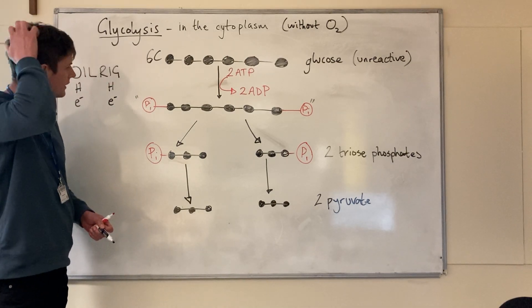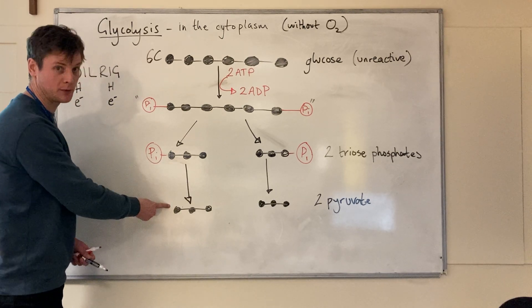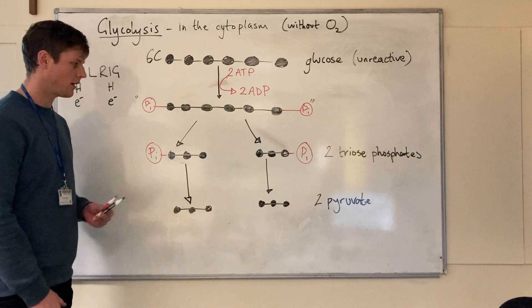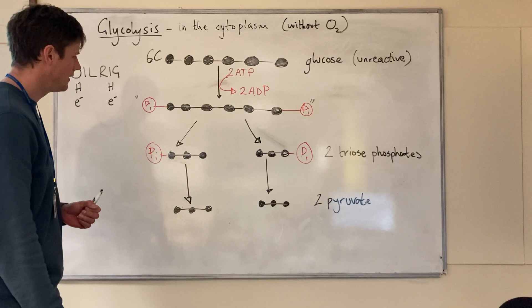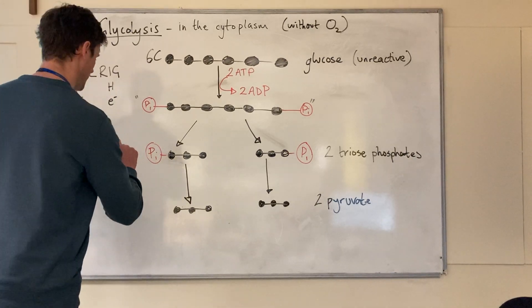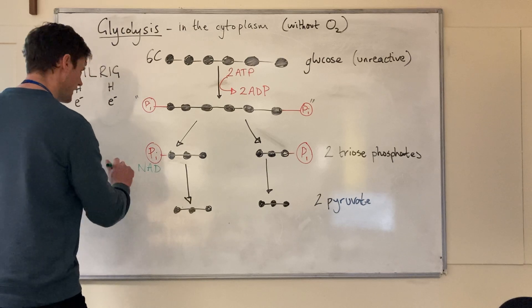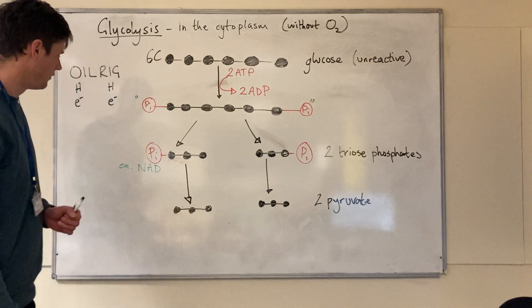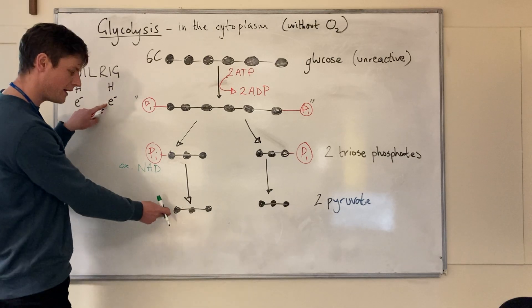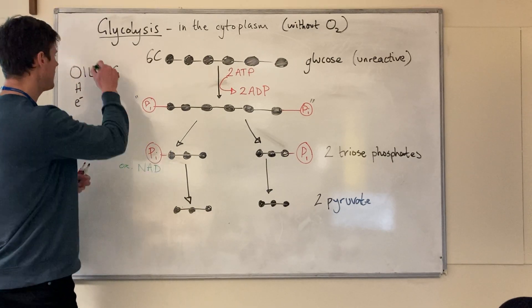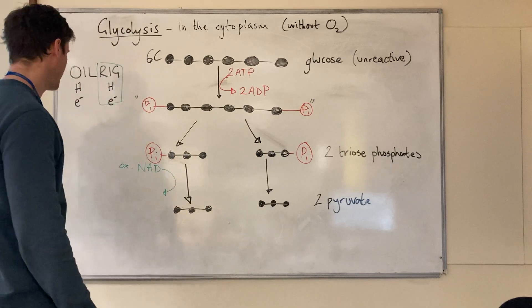You may also know from redox reactions that if one molecule is oxidised, another molecule must be reduced. This is where another important molecule in biology comes in: NAD. NAD in its oxidised form accepts the hydrogen and electrons from the triose phosphate and is therefore reduced — so oxidised NAD becomes reduced NAD.